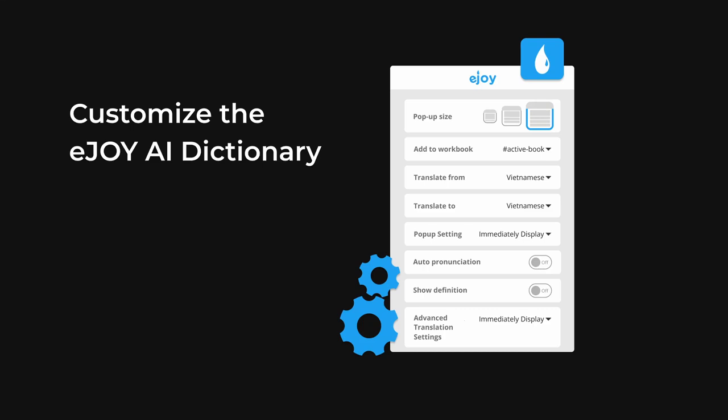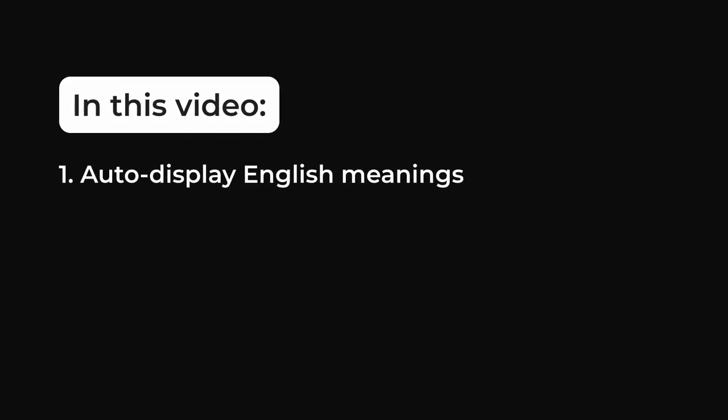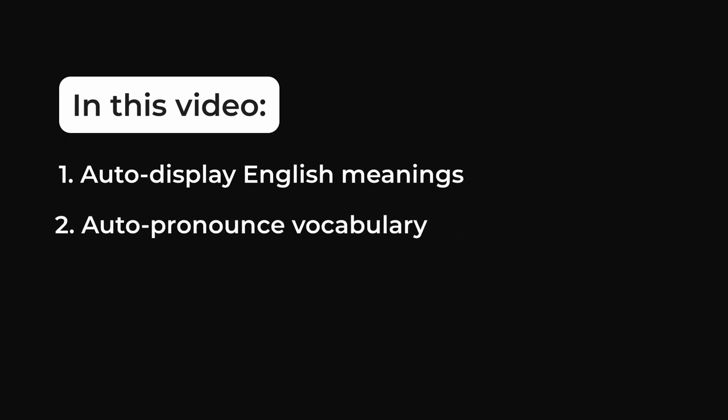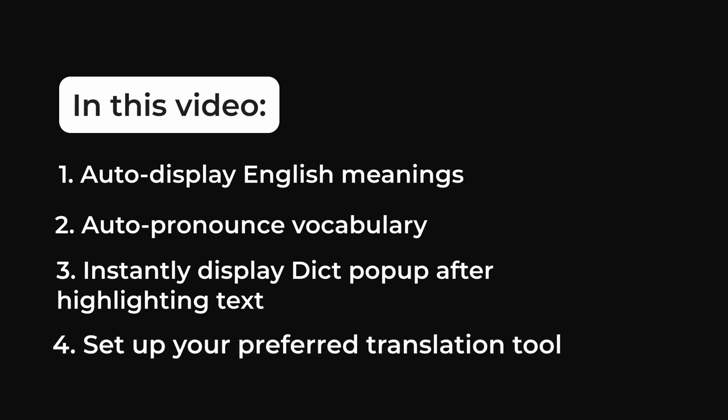Did you know you can customize the pop-up in the eJoy dictionary to help you translate and understand words much faster? This video will guide you on how to auto-display English meanings when looking up words, how to automatically pronounce vocabulary, how to instantly display the pop-up after highlighting a word or paragraph, and how to set up a preferred translation tool when using both eJoy and GlottoJoy.